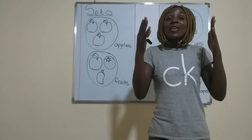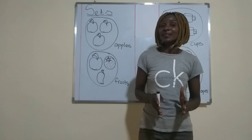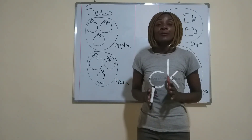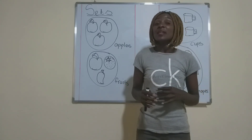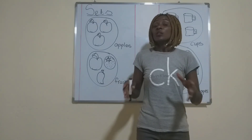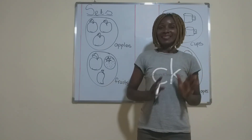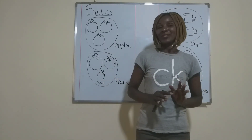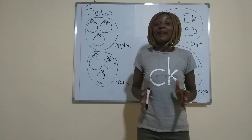Now, your class. Your class also makes up a set. In your class, some of you are learning together — boys and girls — so you can make two sets from your class. You can make a set of boys and you can also make a set of girls. So those are some of the sets that you can make.